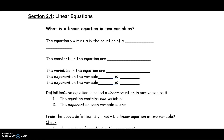Here is an example of an equation: y equals mx plus b. This is an equation of a straight line. The constants in this equation are m and b — they are fixed numbers, so they are called constants. The variables in this equation are x and y. It is called an equation because it has two sides, one on the left side of the equal sign and one on the right.